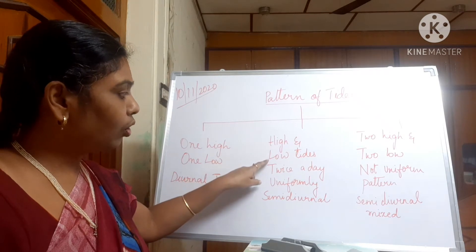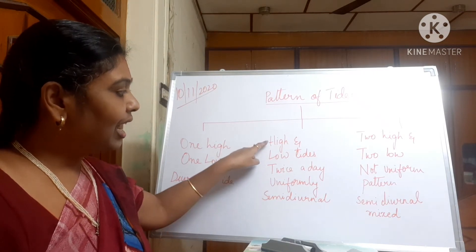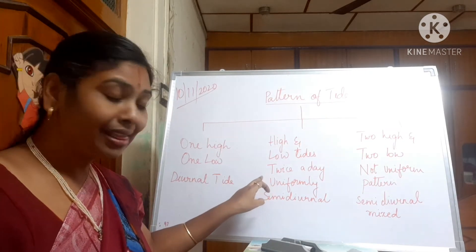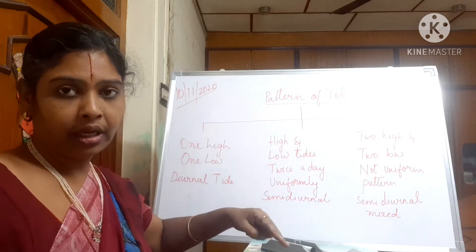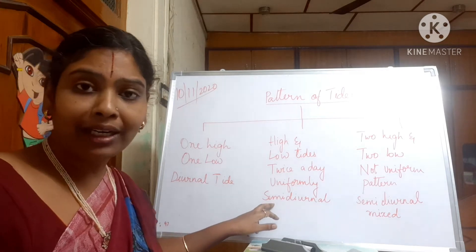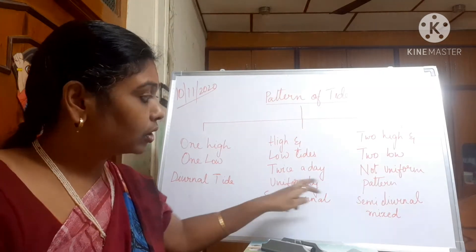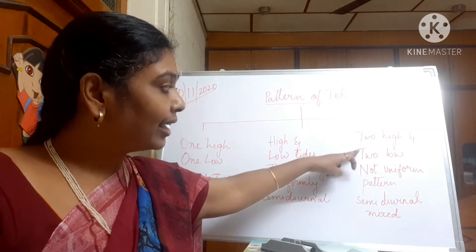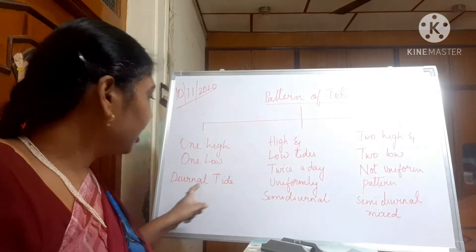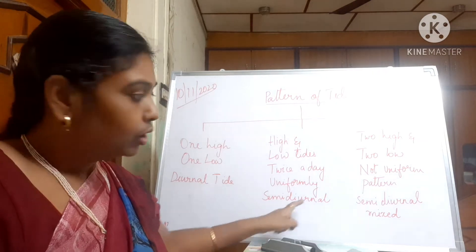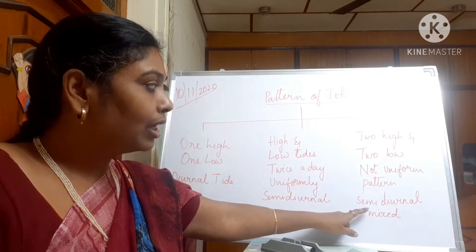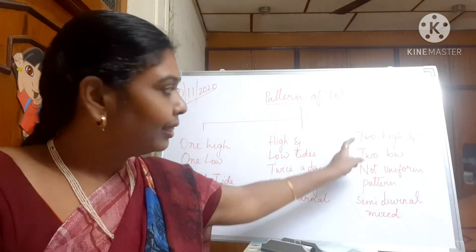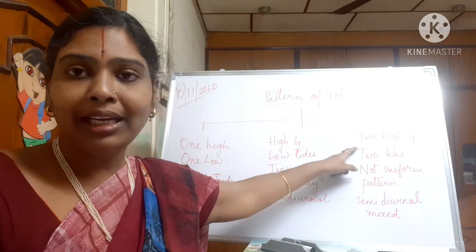Coming to semi-diurnal tides — you find high and low tides forming twice a day, uniformly. These are found normally in the Atlantic coast. In the semi-diurnal mixed tide, you also find two high tides and two low tides, but one will be a diurnal tide and one will be a semi-diurnal tide — so this is not of a uniform pattern.